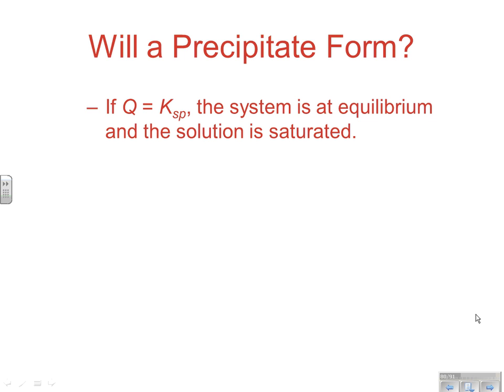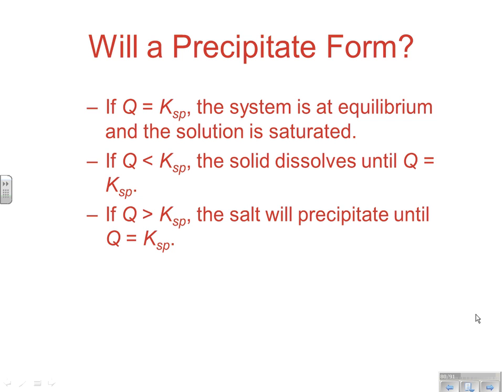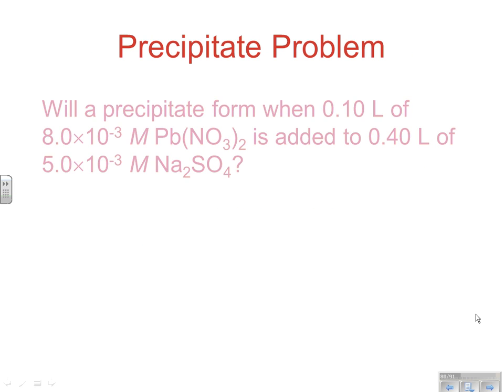If we calculate our Q and it equals the Ksp, that tells us the system is at equilibrium, the solution is saturated. If Q is less than K, that means we didn't have enough ions in there in solution to reach saturation. The solid is going to dissolve until Q equals Ksp. If the Q was greater than the Ksp, that means the ion concentrations were great enough that you're going to reach saturation and beyond and you're going to form precipitate. So you basically compare the calculated Q value to Ksp. If Q is greater than Ksp, you had enough ions to make a precipitate. If Q is less than Ksp, you don't have enough ions. And if Q exactly equals Ksp, then you have a saturated system, but you didn't have enough to form the precipitate.